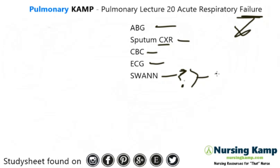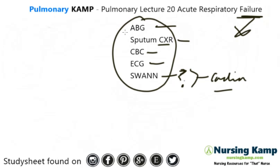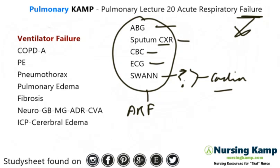I talked about SWANs in my cardiac lectures — please see that lecture. What kind of data are we going to get from this? The first key is what causes acute respiratory failure. It can be a ventilator failure — a ventilator problem. It's the same things that cause acute respiratory distress.